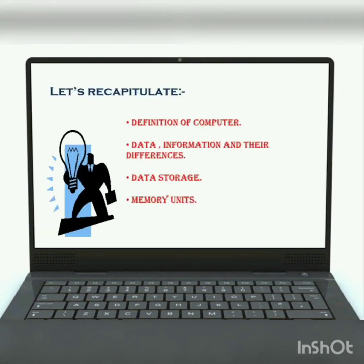Let's recapitulate what we read in today's class. First, we started with a brief definition of a computer. Then we discussed data, information, and the differences between them. Next we read about data storage, and after that we covered memory units. Note down the memory unit chart in your copy and show me. Bye bye and take care.